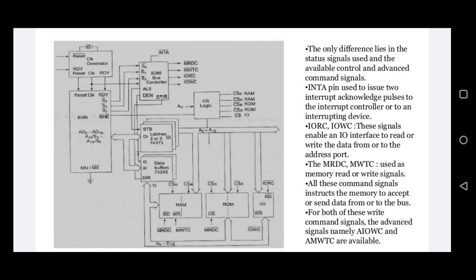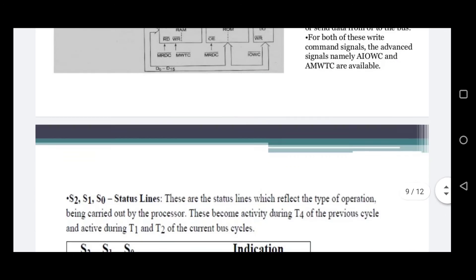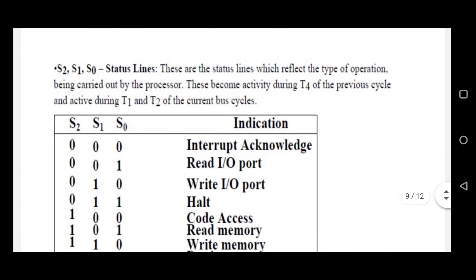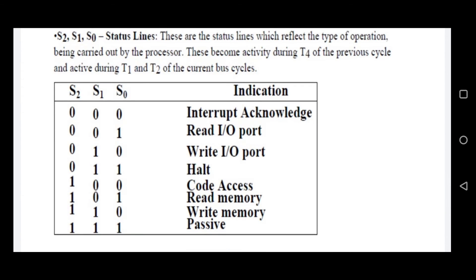Now let's discuss the timing diagram. The maximum mode system timing diagrams are divided into read and write timing diagrams. First, the status lines S2, S1, and S0 define the status of the processor. If all three lines are 0, the indication is interrupt acknowledge; if 001, it is read I/O port; if all status lines are 1, the indication is passive.